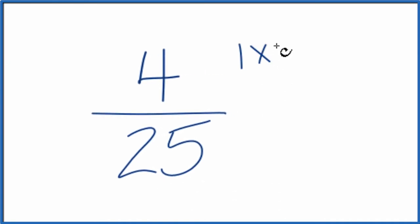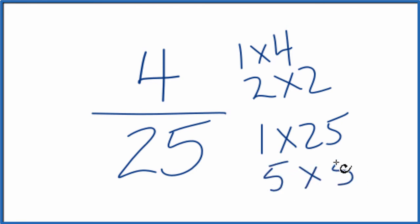1 times 4, that equals 4. 2 times 2, that equals 4. That's about it. 25: 1 times 25, and then 5 times 5. I think that's all.